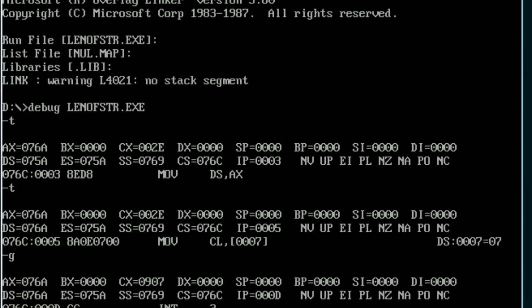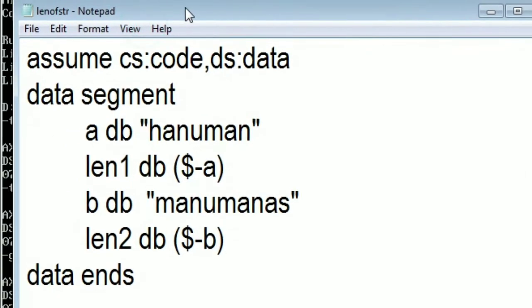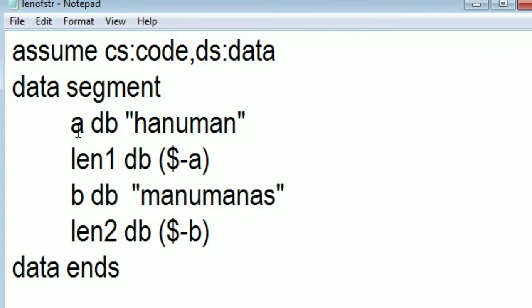Change in the program. What precaution we have to take care is, as soon as we define our input string like this ADB Hanuman, immediately find out its length. So in the board also, I have shown you the program as first I define input string, second input string I define, then I calculated length of the string one and length of the string two.